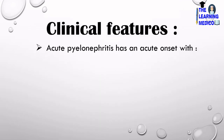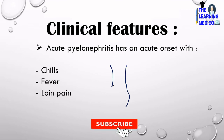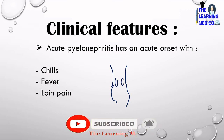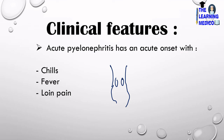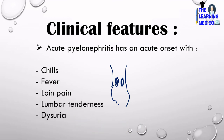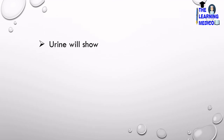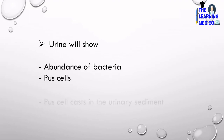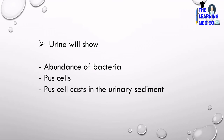Clinical features: when the patient presents, they will have chills, fever, and loin pain — loin pain refers to pain in the back/lumbar region which the patient points to. There will also be lumbar tenderness and dysuria, meaning painful urination. The frequency of micturition is also increased. Urine will show abundance of bacteria, pus cells, and pus cell casts in the urinary sediments.